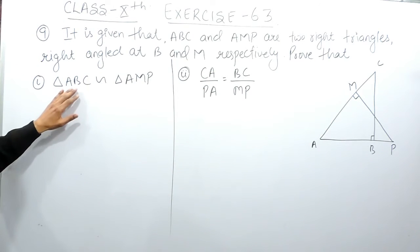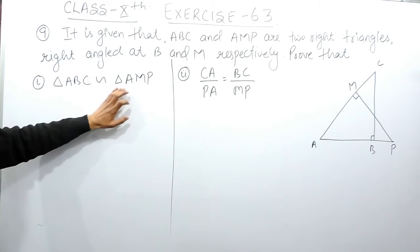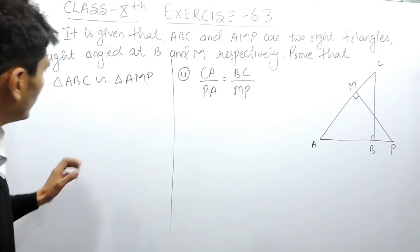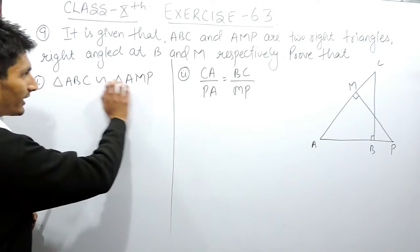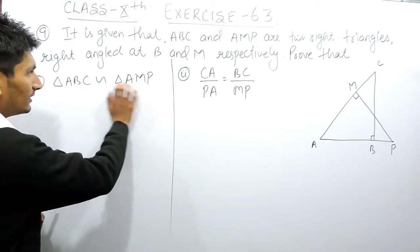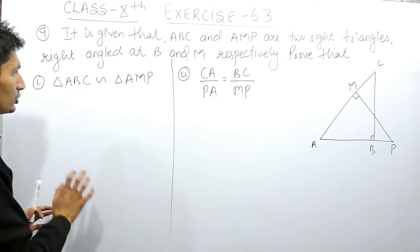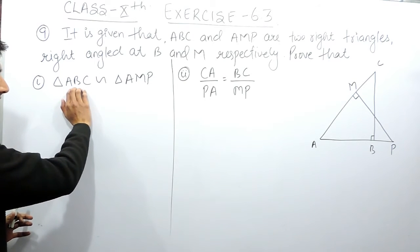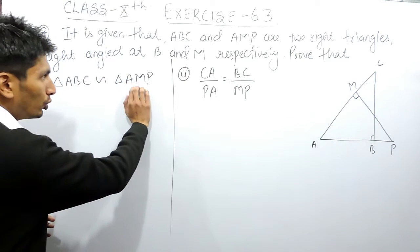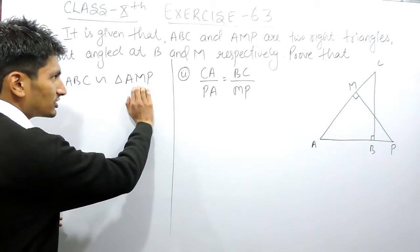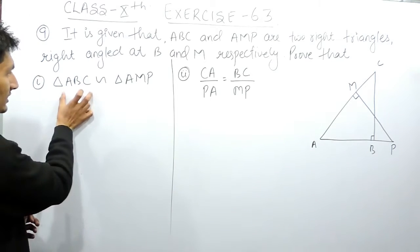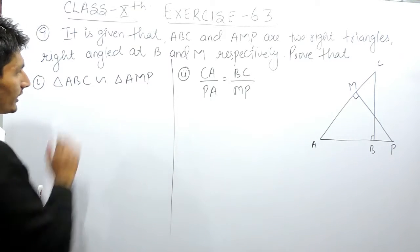In the first part, you have to prove that triangle ABC is similar to triangle AMP. We know that if you want to prove that two triangles are similar, you need to prove that two angles of one triangle are equal to two angles of the other triangle. If you are able to prove that, then the two triangles will be similar.